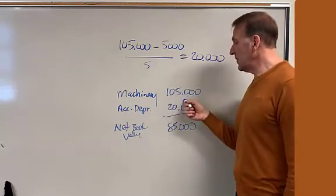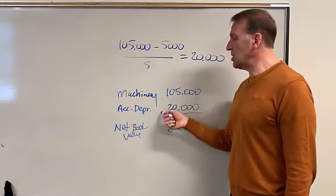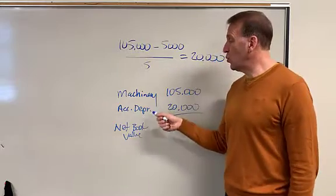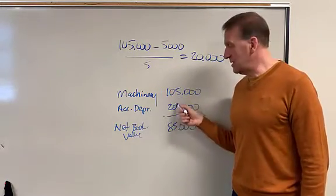Because machinery has a debit balance, accumulated depreciation, which is a contra asset account, it goes with the machinery, but it has a credit balance.